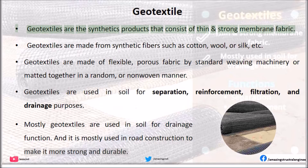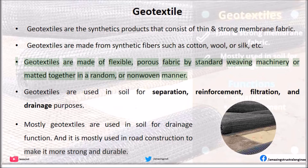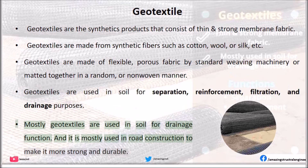Geotextiles are synthetic products that consist of thin and strong membrane fabric. Geotextiles are made from synthetic fibers such as cotton, wool, or silk, etc. They are made of flexible, porous fabric by standard weaving machinery or matted together in a random or non-woven manner. Geotextiles are used in soil for separation, reinforcement, filtration, and drainage purposes. Mostly geotextiles are used for drainage function and are also mostly used in road construction.